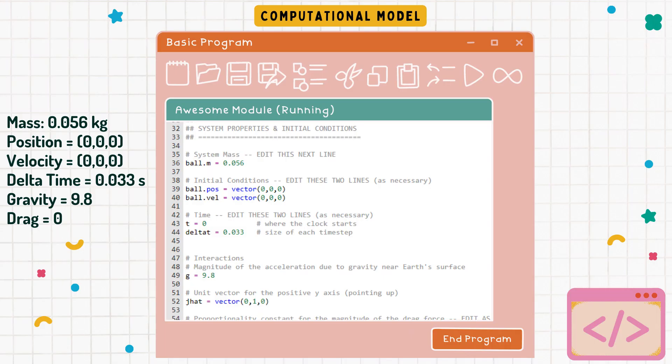After gathering this information I was able to move to the computational models. In this first section of code I just established the key values you can see on the screen which were the same for both models with the exception of drag being zero for the first model and a positive value for the second one.